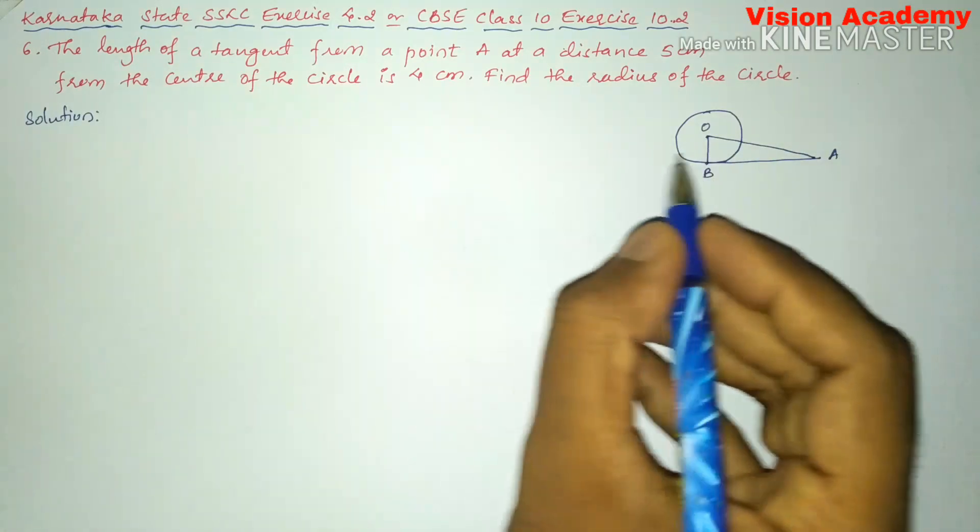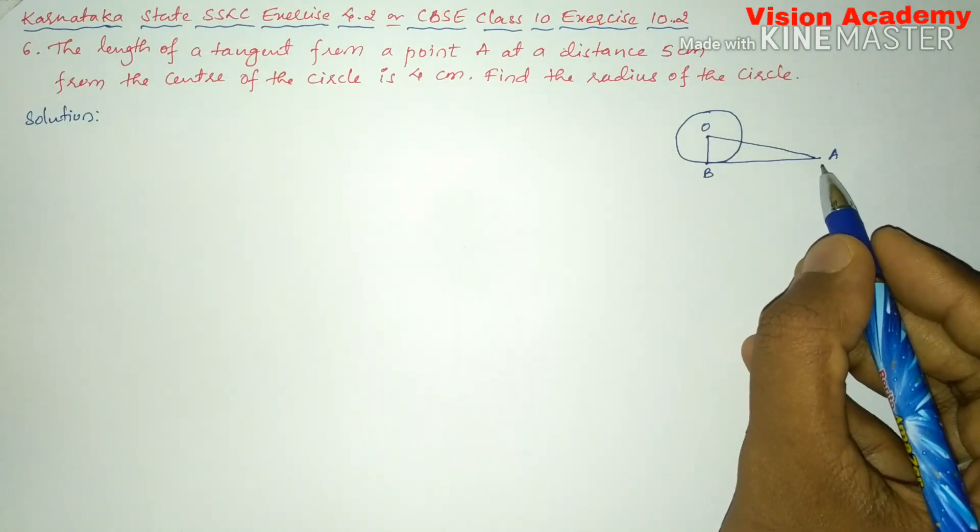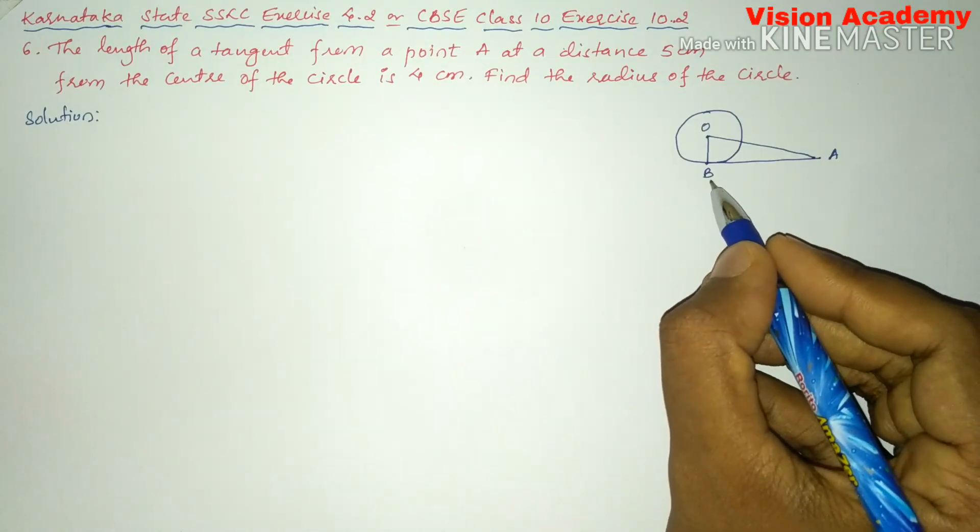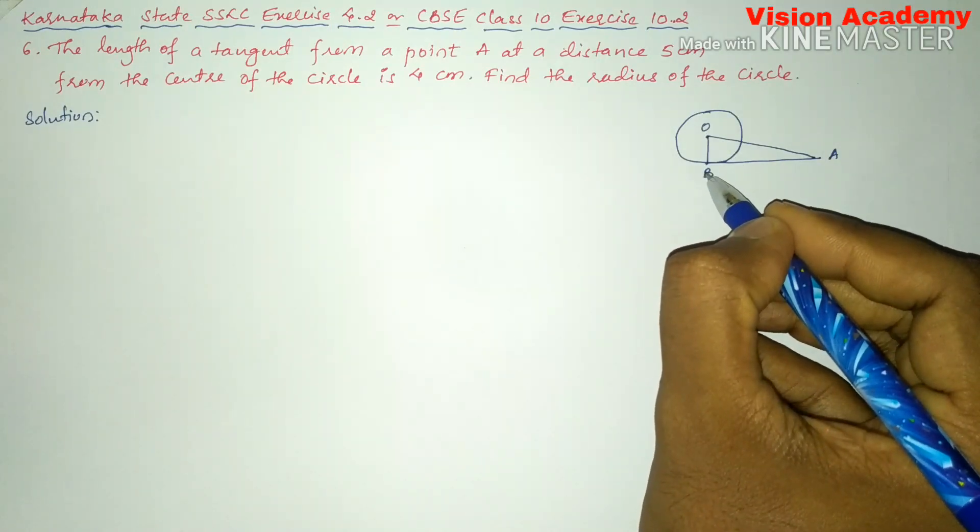In the figure, O is the center of the circle and AB is the tangent at the point of contact B. Now, OB is perpendicular to AB.